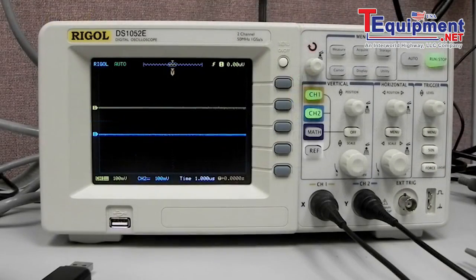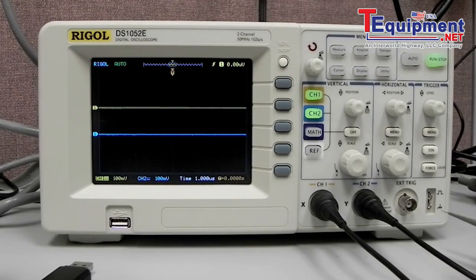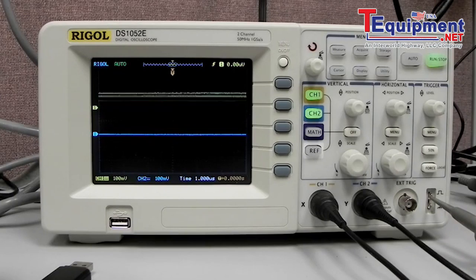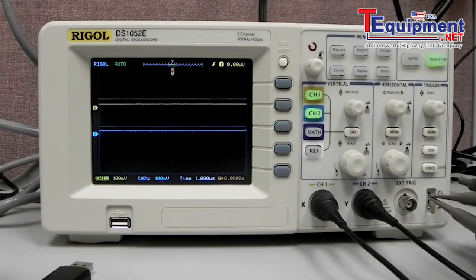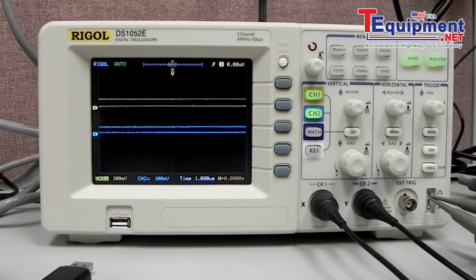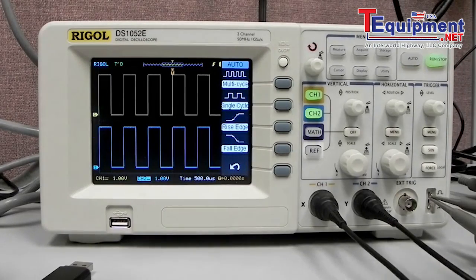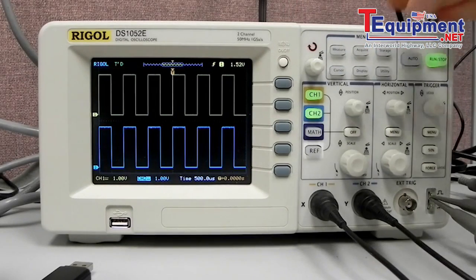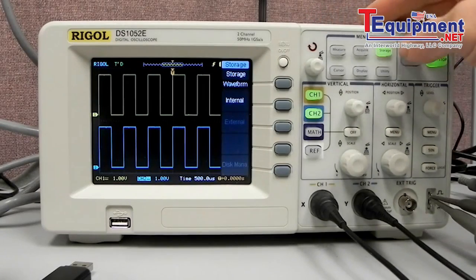I'd like to take a closer look at some of the storage capabilities of the DS-1000 series of scopes. I'm going to connect channel one and channel two to the square wave generator. I'm going to press auto. Now on this display we should see two square waves.